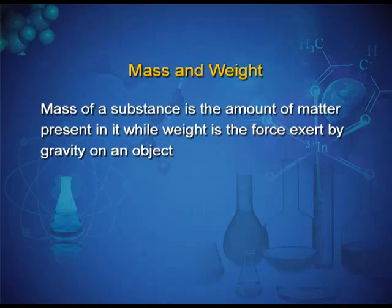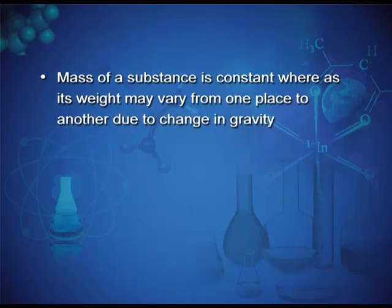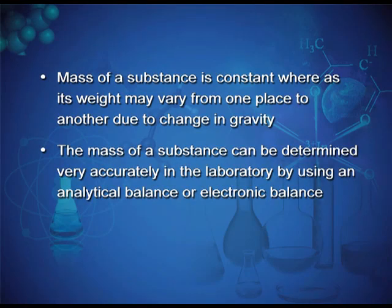Mass and weight: mass of a substance is the amount of matter present in it, while weight is the force exerted by gravity on an object. Mass of a substance is constant whereas its weight may vary from one place to another due to change in gravity. The mass of a substance can be determined accurately in the laboratory by using an analytical balance or electronic balance.